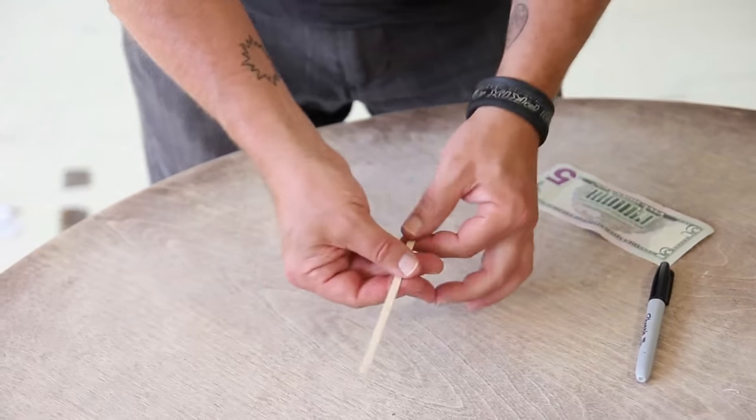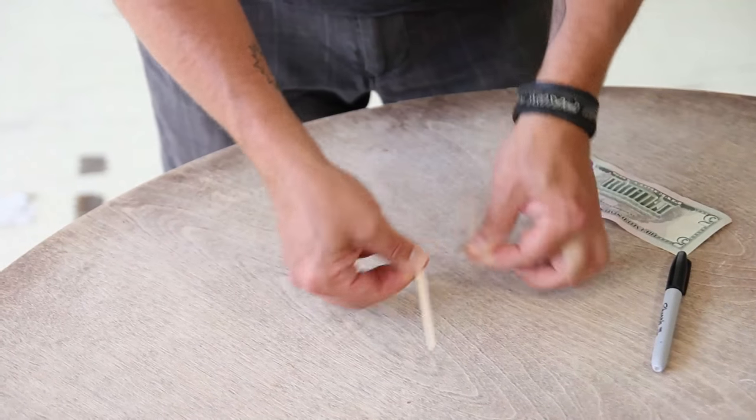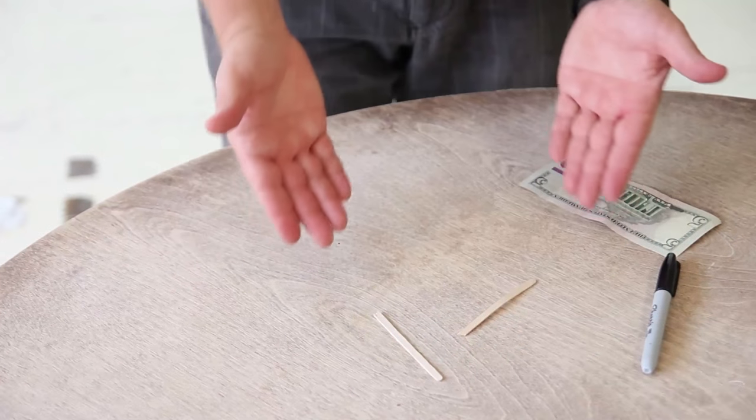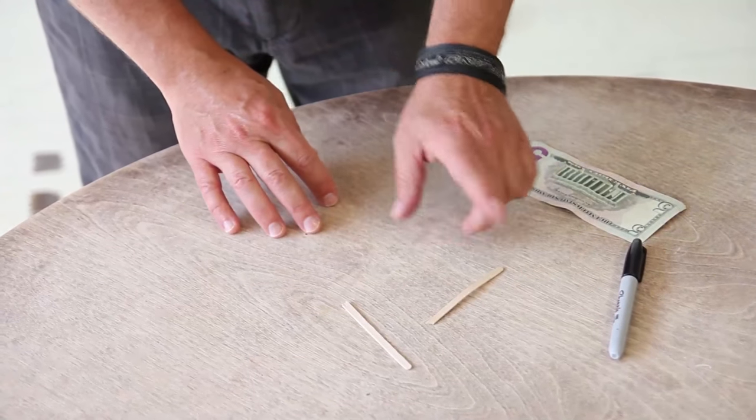And you say to someone, look, let's try something here. I'm going to take the stir stick and snap it about half, like this. And you say, you choose either one. The one you choose is the one we're going to use. And let's say they choose this one.